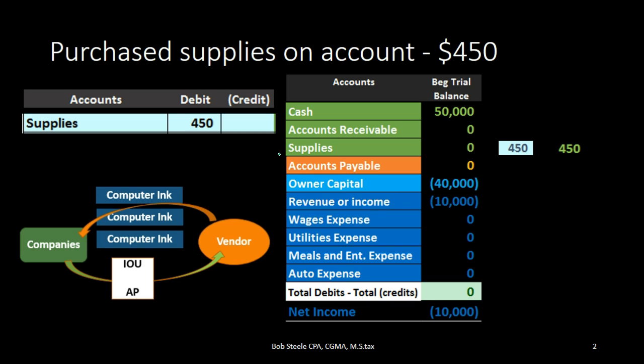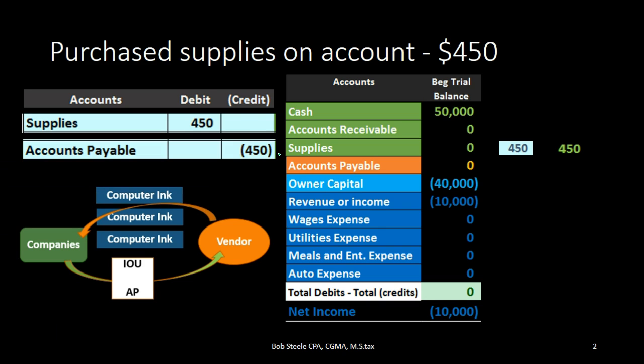What will the credit go to? It's not going to go to cash because we didn't pay cash. We're going to credit the accounts payable account instead. It will be credited because we debited the asset account of supplies. The accounts payable account is a credit balance account because all liability accounts are, and we need to make that liability go up by doing the same thing — another credit. So it does make sense that we are crediting it.